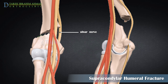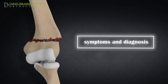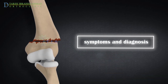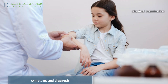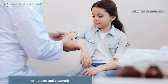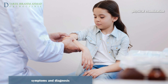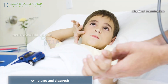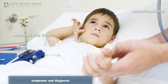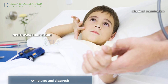However, the ulnar nerve is prone to injury following flexion-type fractures. For symptoms and diagnosis, the doctor will ask how the injury occurred and will perform a focused physical examination of the involved extremity, with attention to diminished or absent pulse, neurologic deficit, signs of acute compartment syndrome, open wounds, and signs of associated fractures.